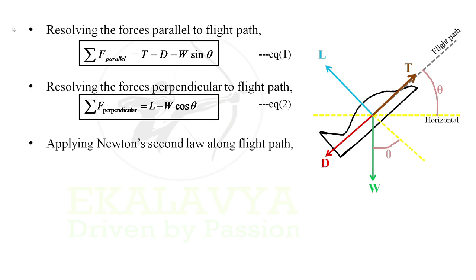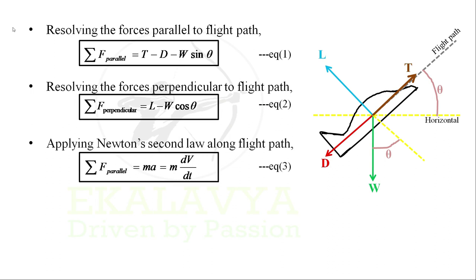Applying Newton's second law along the flight path, we have: summation of forces parallel to the flight path equals mass times acceleration. Acceleration can be expressed as change in velocity with change in time (dV/dt). Let us denote this as Equation 3.